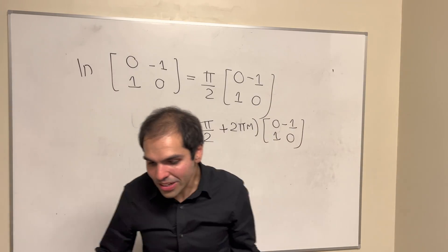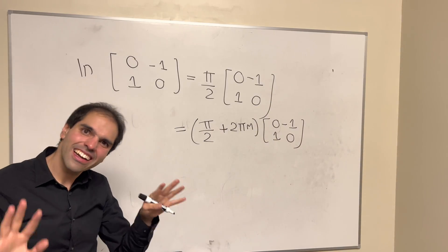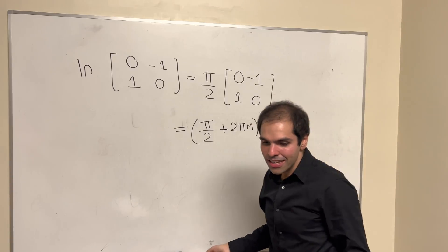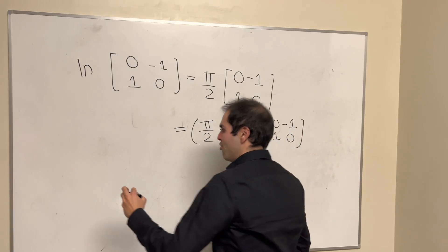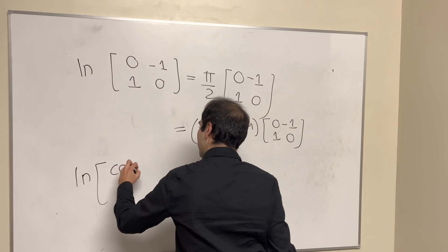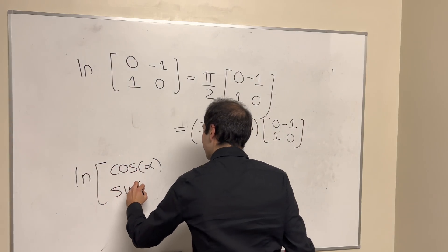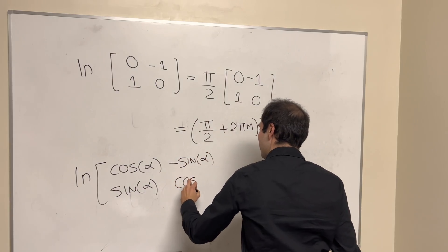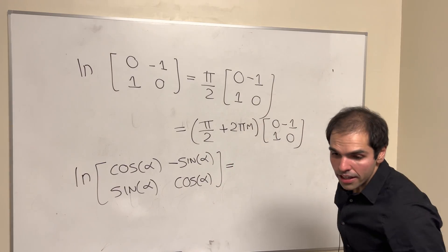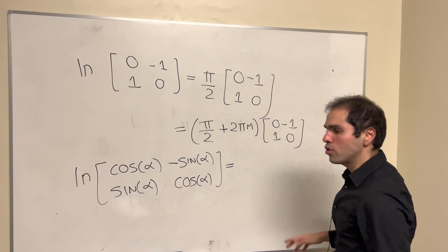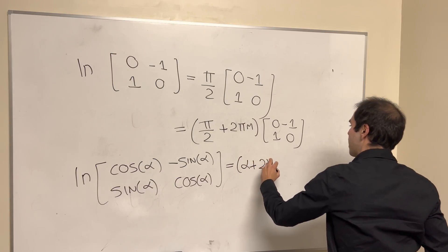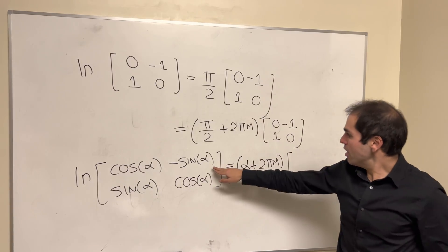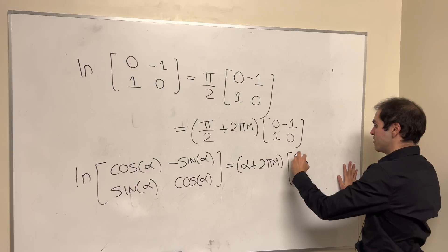You might ask, is this a coincidence? Kind of, because it has something special to do with 90 degrees. If you do ln of rotation by a general angle α — so the matrix [[cos α, sin α], [−sin α, cos α]] — then it turns out you get (α + 2πm) times, surprisingly, still this same matrix [[0, −1], [1, 0]].